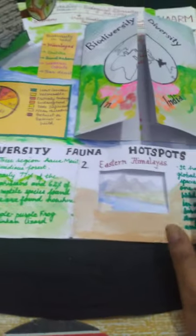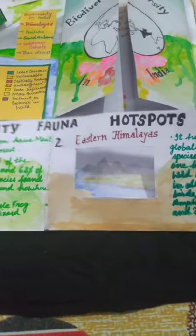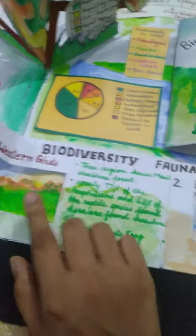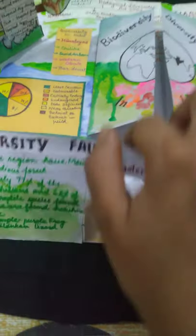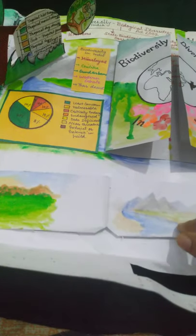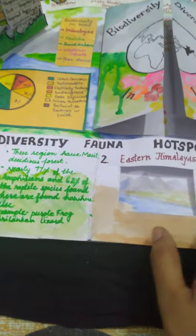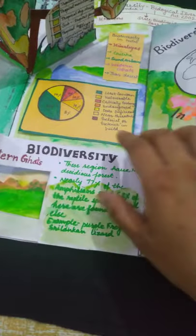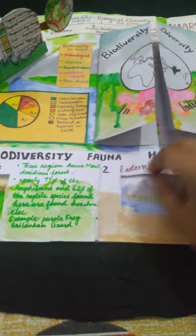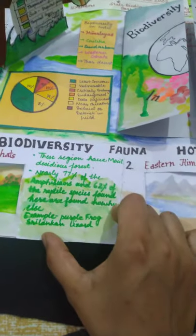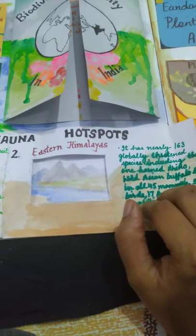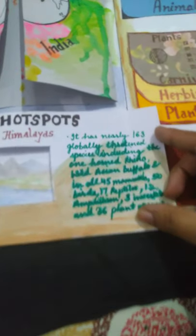Here I've used a chart paper and folded it like a scenery kind of thing. I've painted and pasted paper showing the Western Ghats, Eastern Himalayas, and Western Himalayas. I've written the information related to these places; if you want to read it, you can pause and read it.